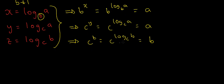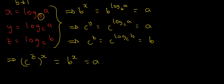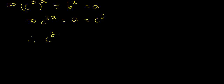So c to the power z, all to the power x, equals b to the power x, which equals a. That tells me c to the power of z times x equals a — using the rule that c to the z to the x is c to the zx. But from my second equation, a equals c to the power y. So c to the zx equals c to the power y, and since exponential functions are injective over the real line, zx equals y.